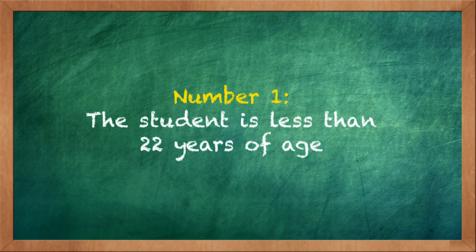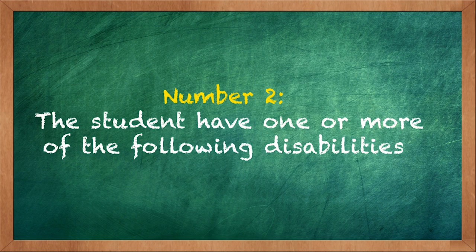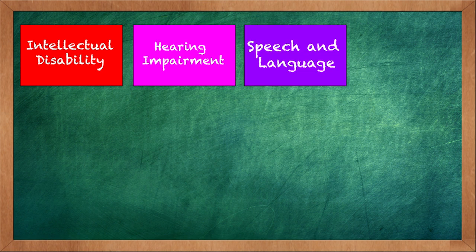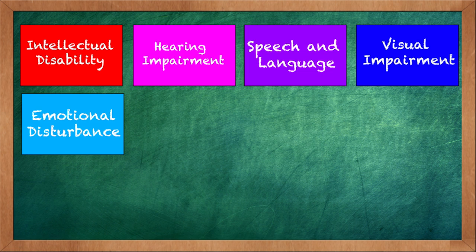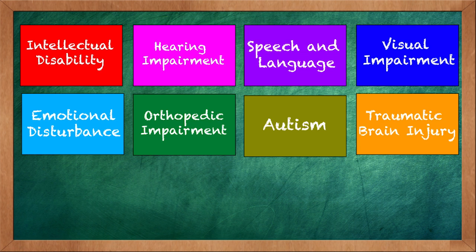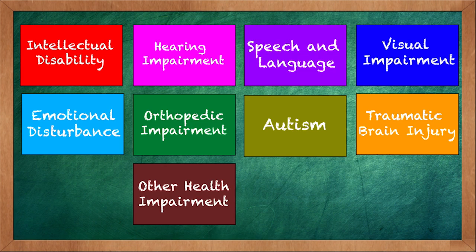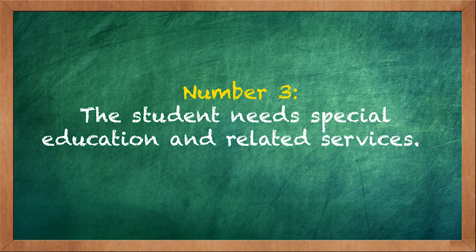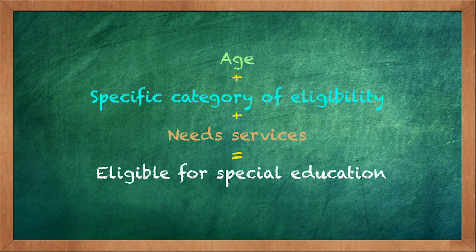Number one, the student is less than 22 years of age. Number two, the student has one or more of the following disabilities: intellectual disability, hearing impairment, speech and language impairment, visual impairment, emotional disturbance, orthopedic impairment, autism, traumatic brain injury, other health impairment, or learning disability. And number three, the student needs special education and related services. In order to qualify for special education services, the student has to meet all three prongs of the test. It's not enough for a student to have a disability — they must also be within the correct age range and need special education and related services.